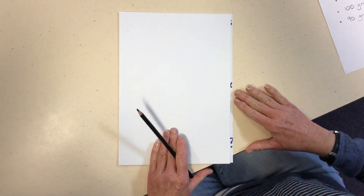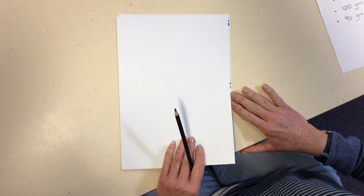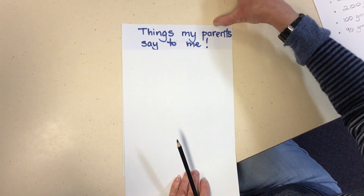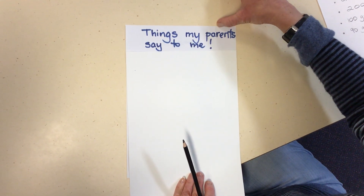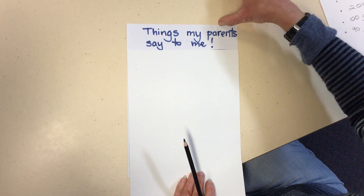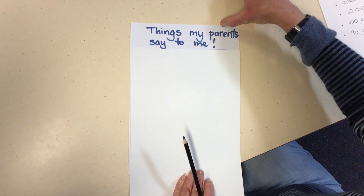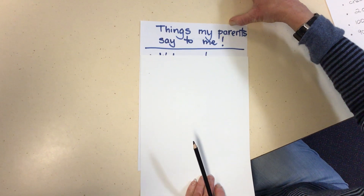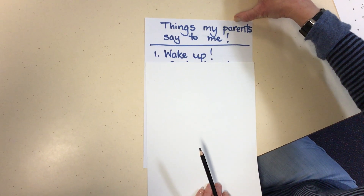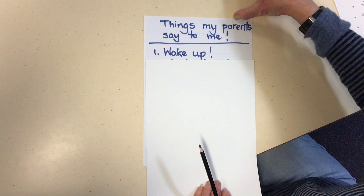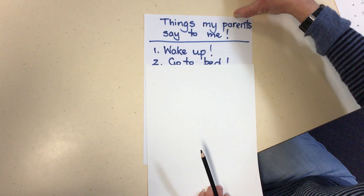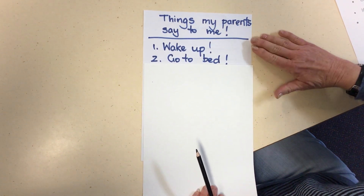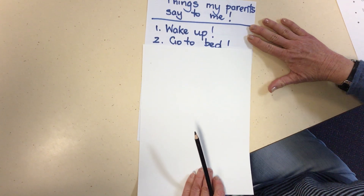This next list I've already gone ahead and written most of it for you — 'Things my parents say to me.' When I was growing up, these are the things my parents said to me. Number one: they'd always be telling me to wake up. Number two: they'd always be telling me to go to bed. As you can see, I was very confused as a child.